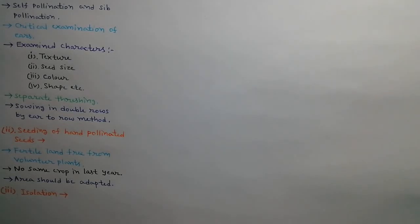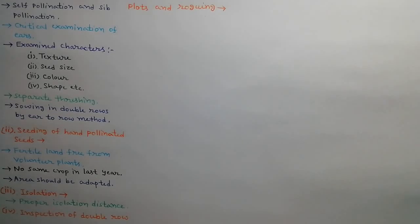Third step is isolation. Proper isolation distance should be maintained to prevent contamination due to natural cross pollination and disease spreading. Fourth step is inspection of double row plots and rogging. Double row plots must be checked carefully before pollen shedding and off-type plants are removed. Identification of off-types is very easy because they are more vigorous than inbreds.